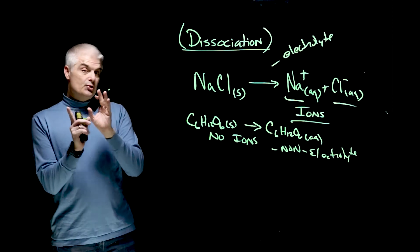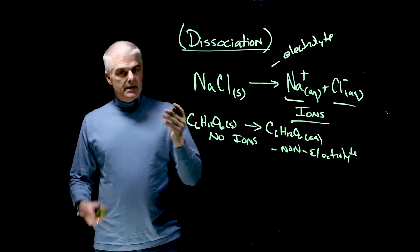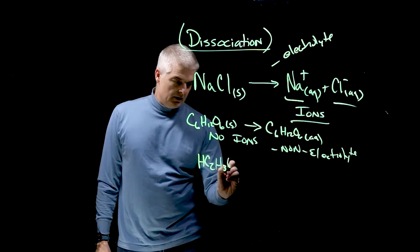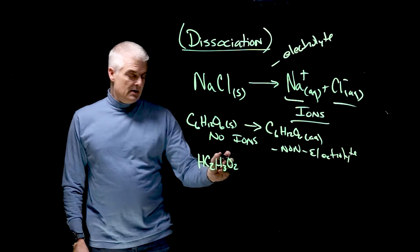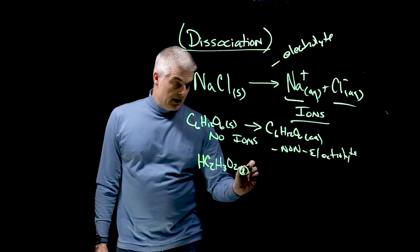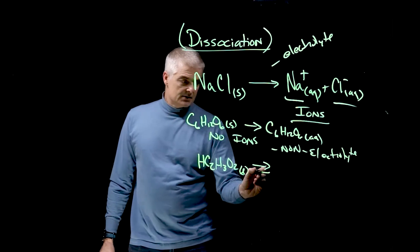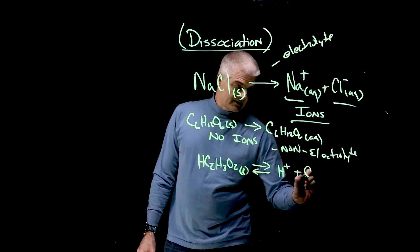And there's actually a third category, one we call a weak electrolyte. This is an interesting one. We can take vinegar. Now vinegar is acetic acid, it's HC2H3O2. And if we take vinegar, which is a liquid as it turns out actually, and I drop that into water, when it breaks apart it actually has a double arrow and breaks apart to hydrogens and acetates.